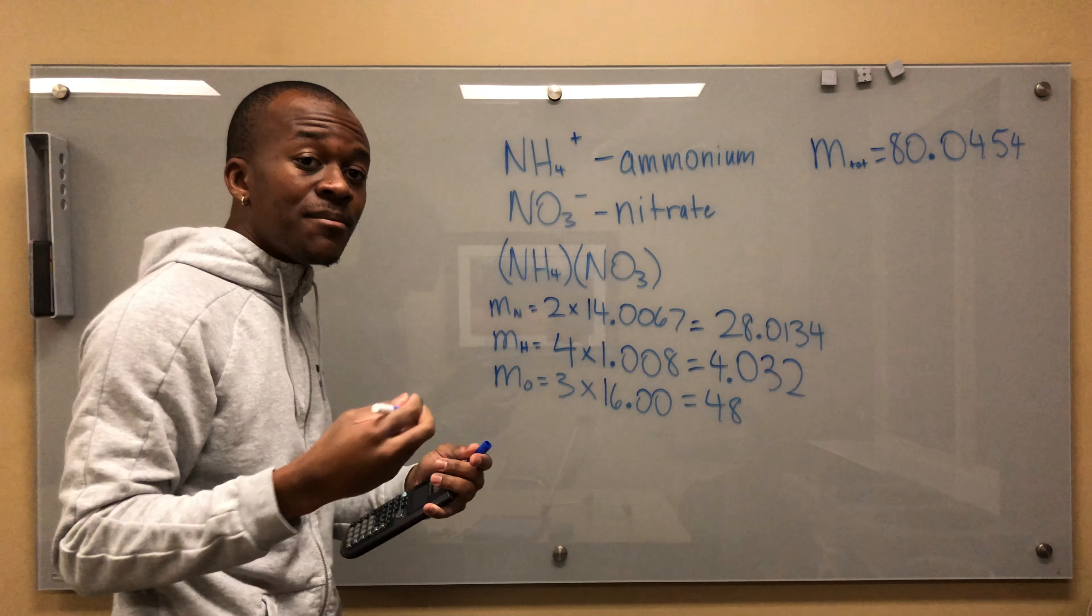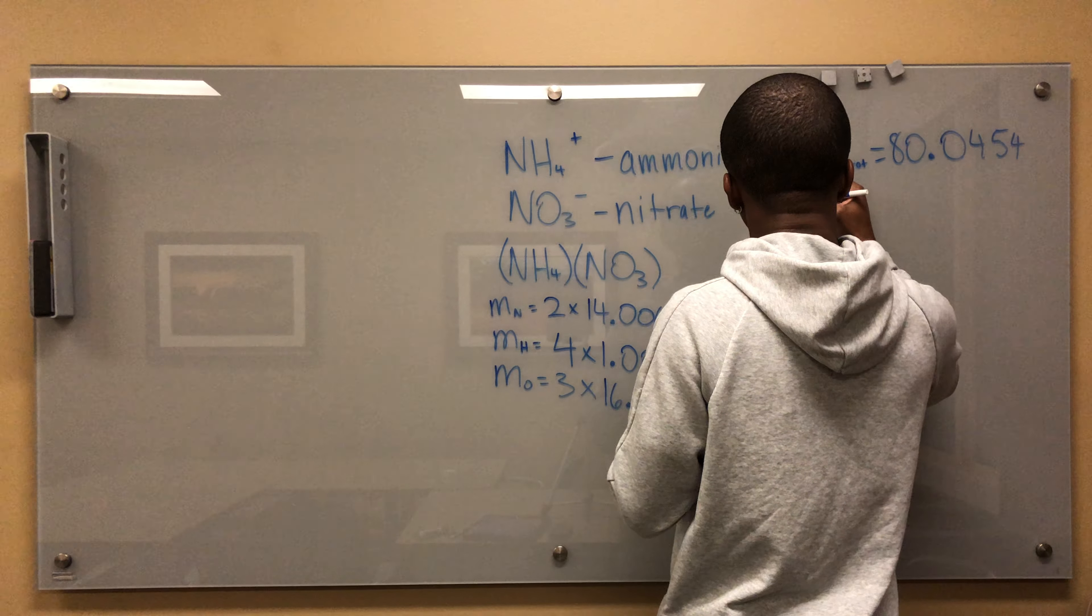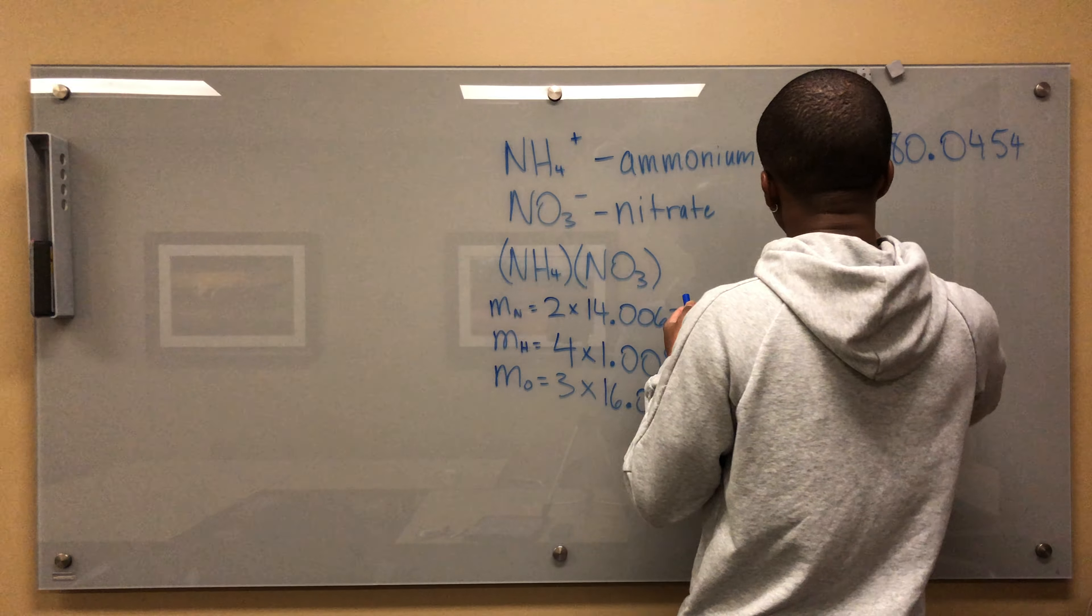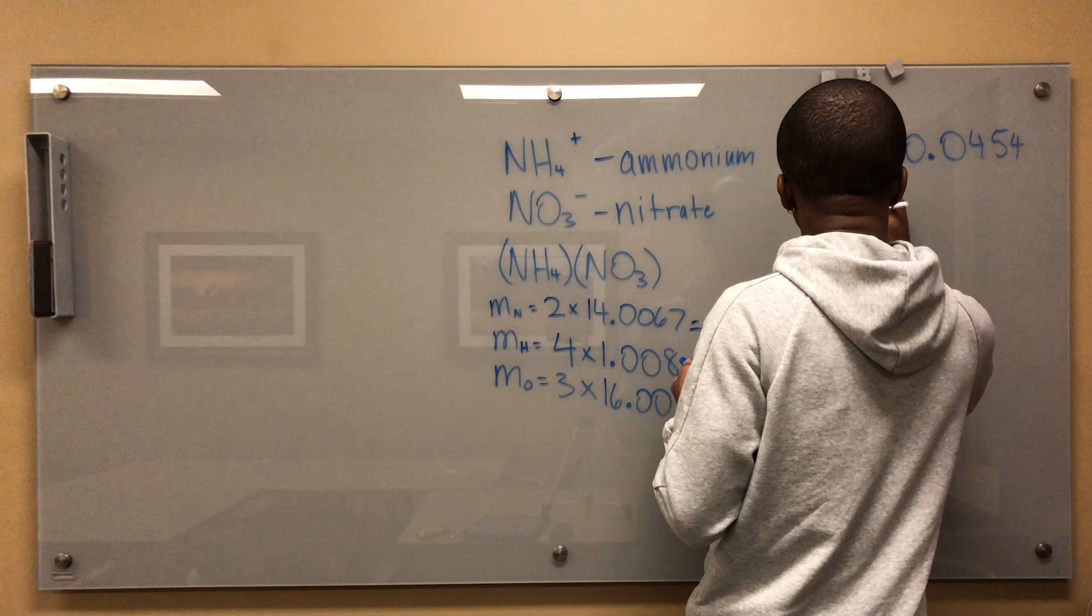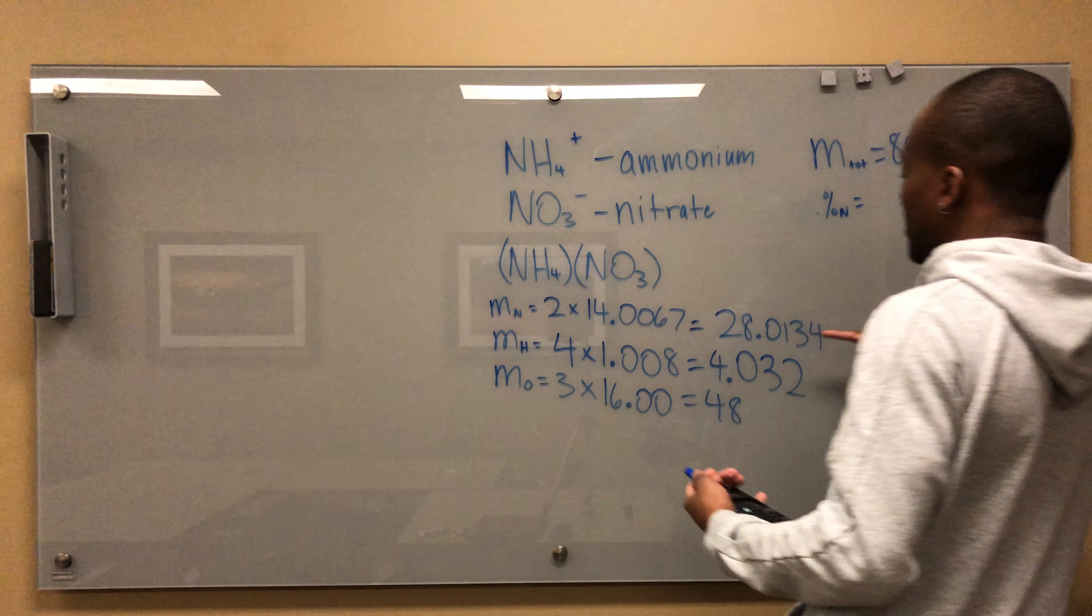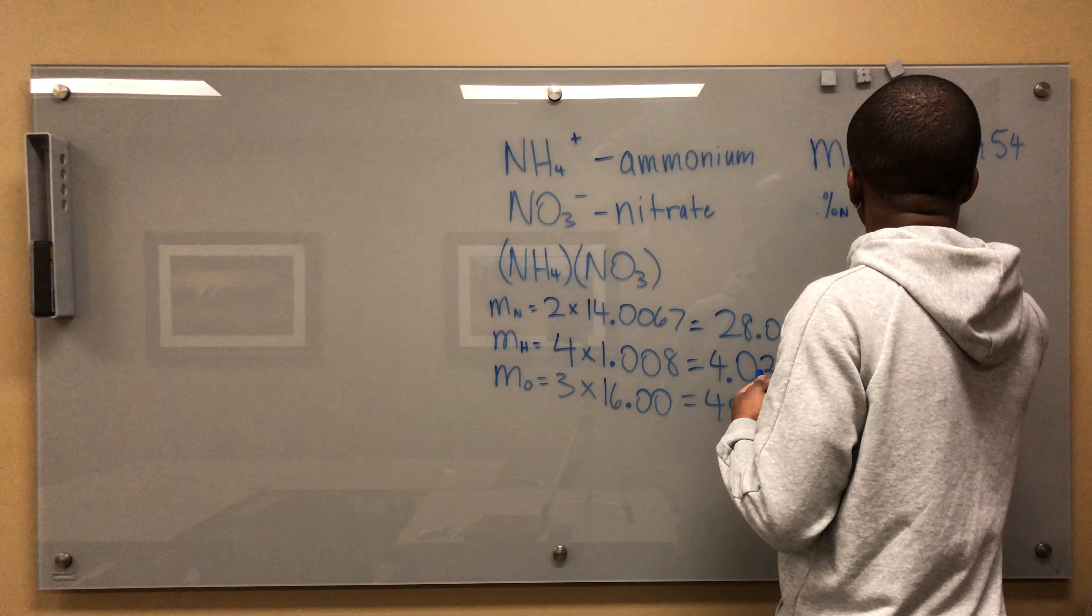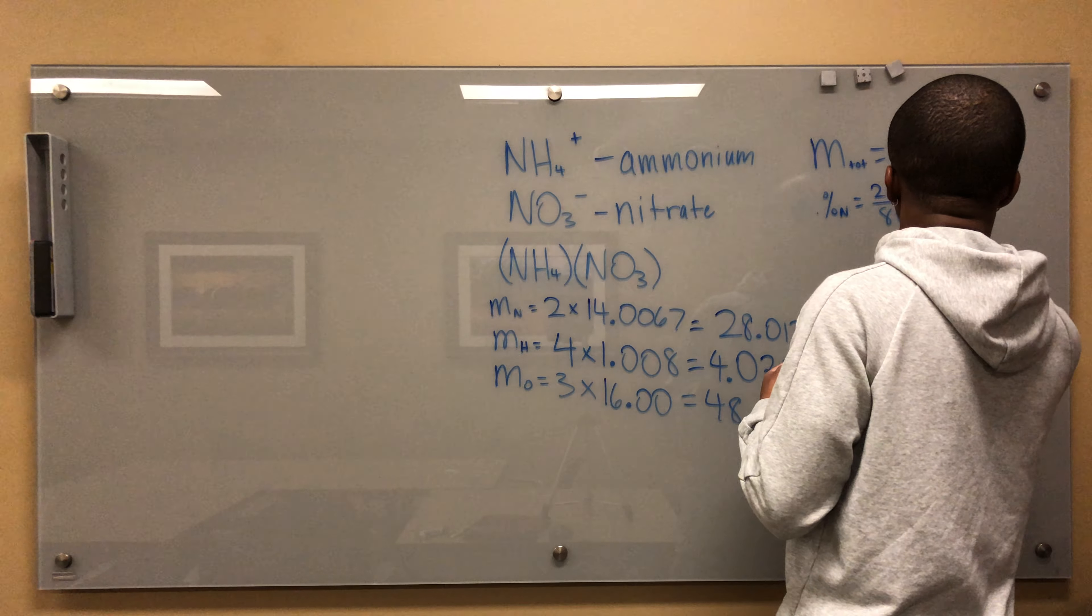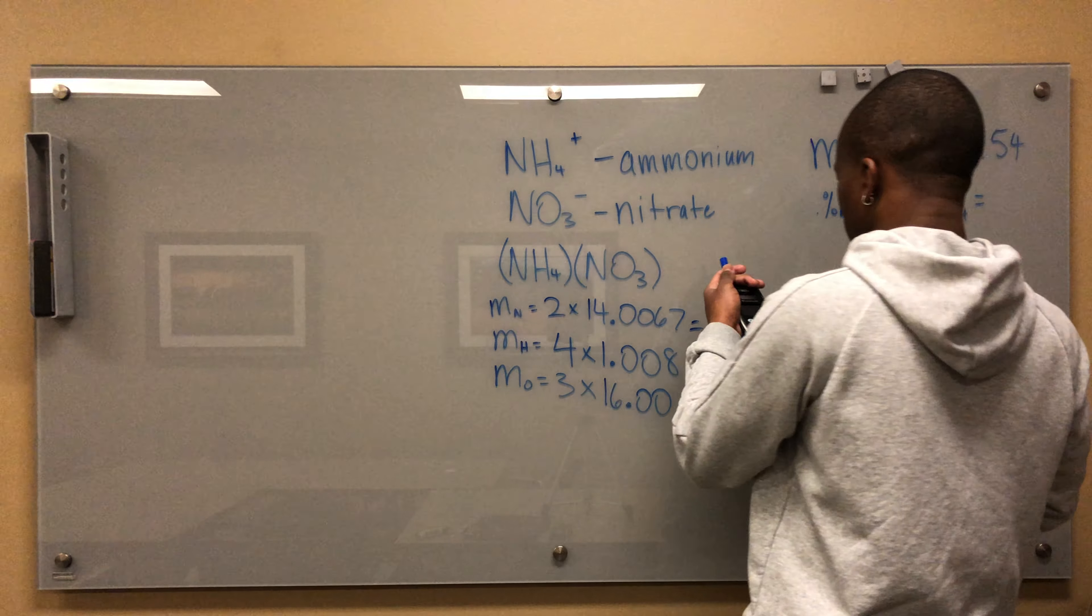Now if I want to find the mass percentage, percentage of nitrogen equals this number over my total: 28.0134 divided by 80.0454. That gives me 0.263, so 26.3 percent.